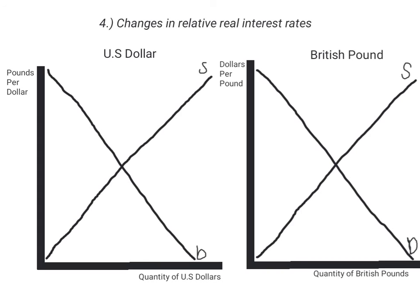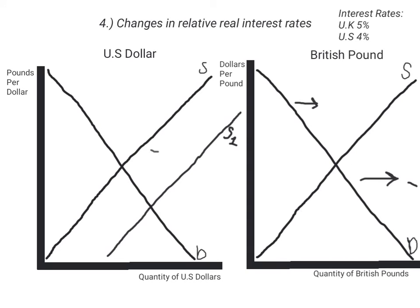Another factor that can cause a currency to appreciate or depreciate is changes in real interest rates. For example, let's say that the real interest rate in the UK is 5%, while in the US it is only 4%. The demand for the British pound is going to increase, as investors will invest their money in whichever country has the higher real interest rate. The supply of the US dollar in the foreign exchange market will also increase, as investors exchange their money for pounds in order to get the higher interest rate. As a result, the US dollar has depreciated, while the British pound has appreciated.